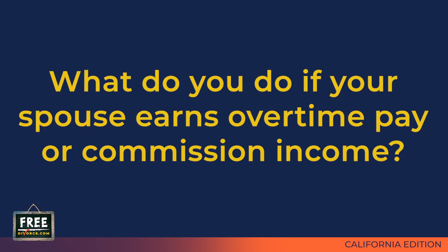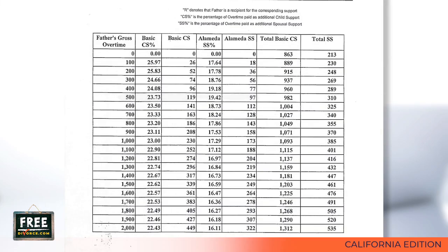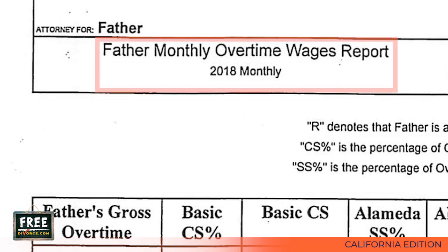What do you do if your spouse earns overtime pay or commission income? If one party earns overtime pay or commission income, you can use charts that the Dissomaster Program provides to figure out how much additional spousal support should be paid based on that income. We are now looking at the second page of our sample support calculation, called the Father Monthly Overtime Wages Report.